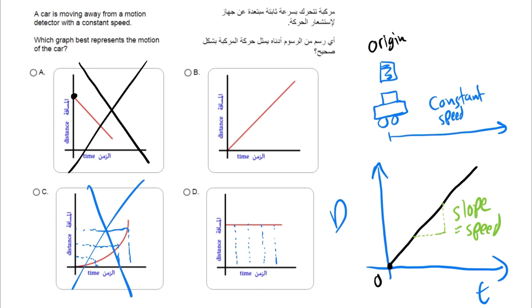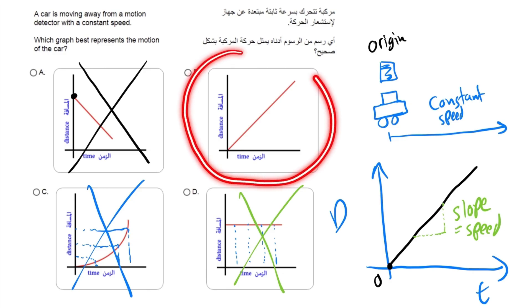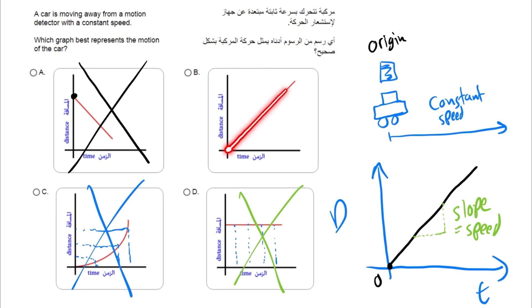We end up with B. B is the correct answer because if you take a look at the graph, we are starting from the origin and we are moving in a straight line. As time passes by, the more time elapses, the same incremental distance. Hence, we do have a constant speed and we do have a constant value for the slope. So we conclude from this question that the answer is going to be B.